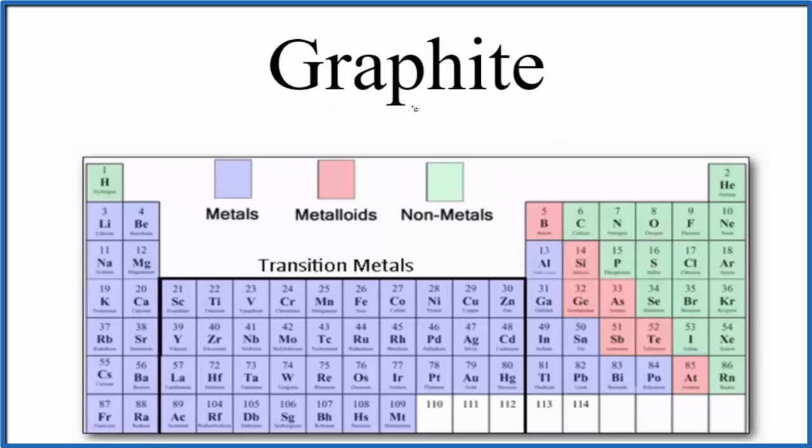So the first thing to note is that graphite is just made up of carbon. Just C, that's carbon. So if we look at the periodic table, carbon right here, carbon is a non-metal.